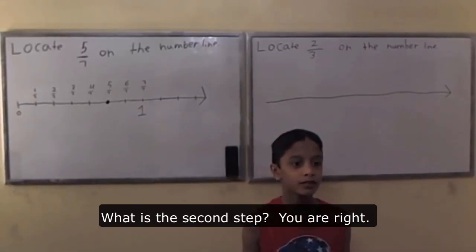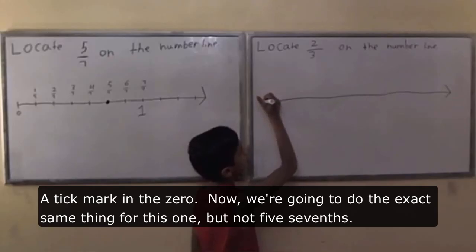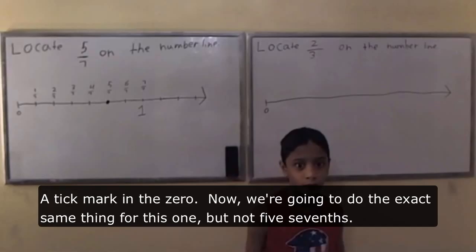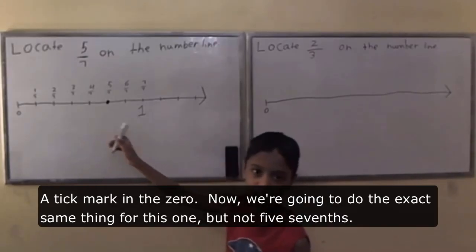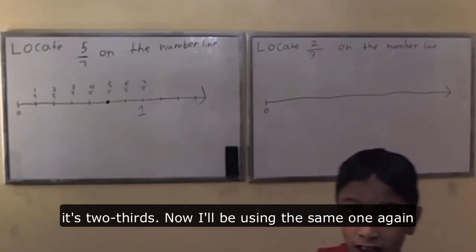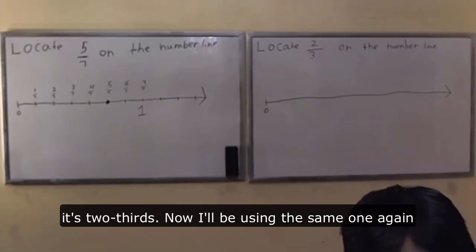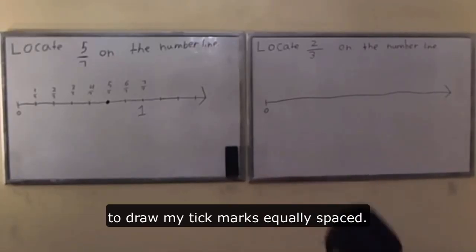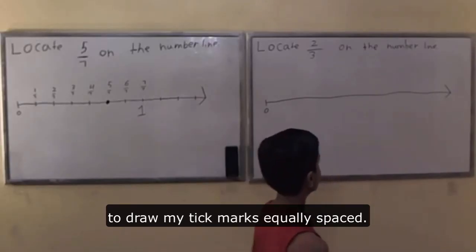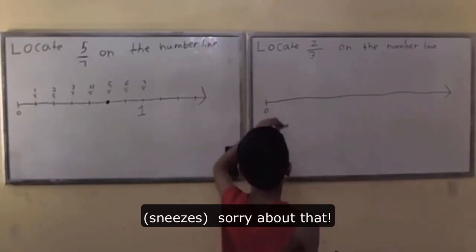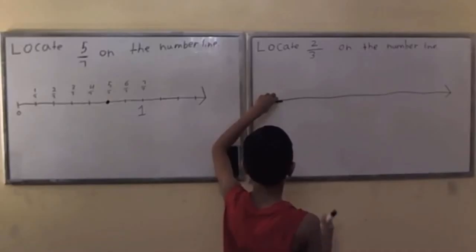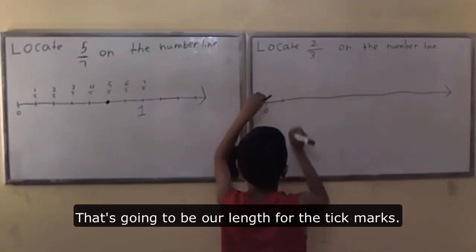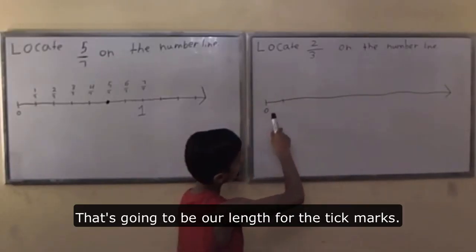What's the second step? You're right, tick mark at the zero. Now we're going to do the exact same thing for this one, but not 5/7—it's 2/3. I'll be using the same one again to draw my tick marks equally spaced. That's gonna be our length for the tick marks.